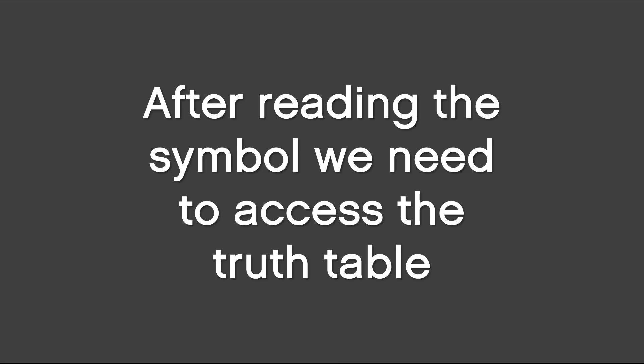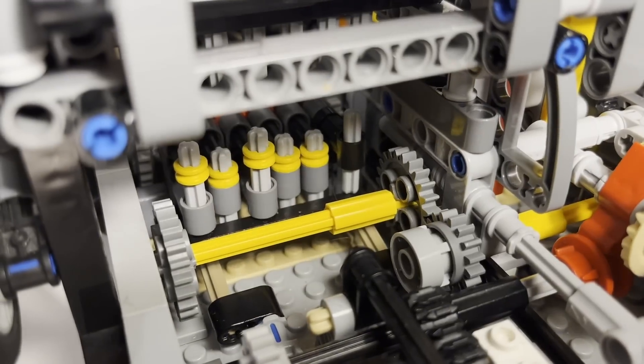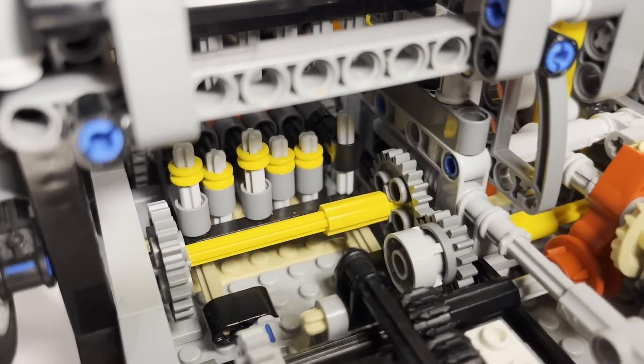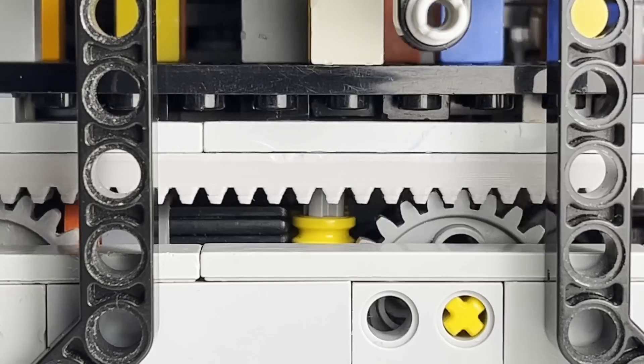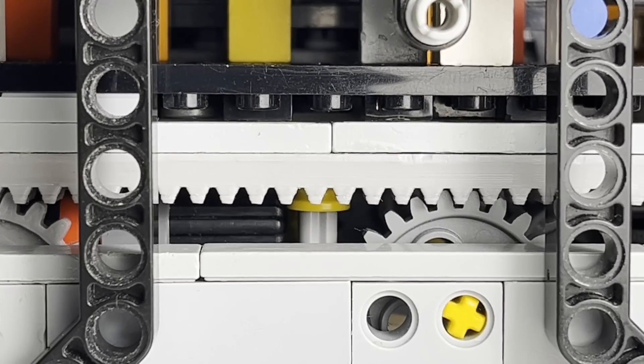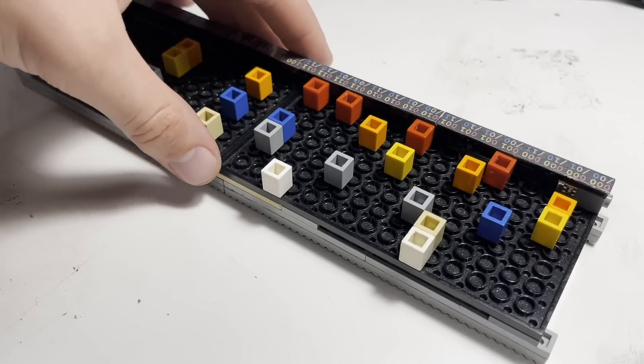After reading the symbol, we need to access the truth table. These 5 pins are the previously mentioned registers. They've been set based on the symbol and the current state, and only the ones set to logical one are part of the mechanism. And how does this mechanism work? Well, the pins are pushed while searching for the proper address on the back of the truth table. When they find it, the searching process stops. The addresses look physically like this.